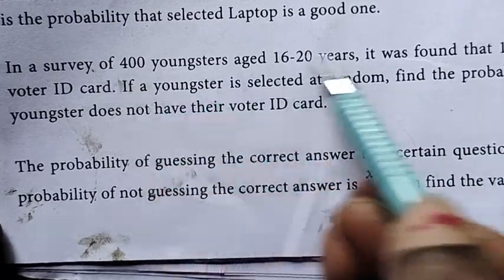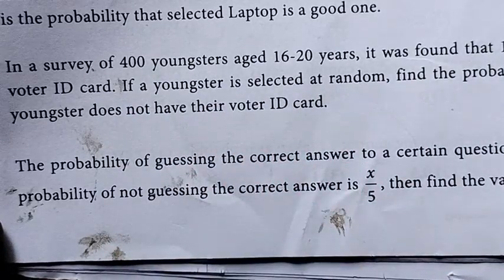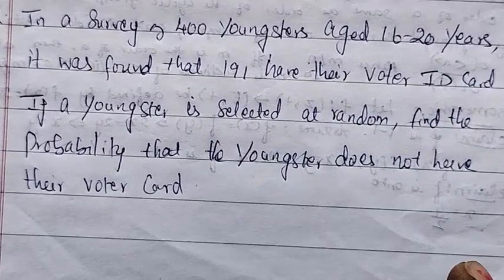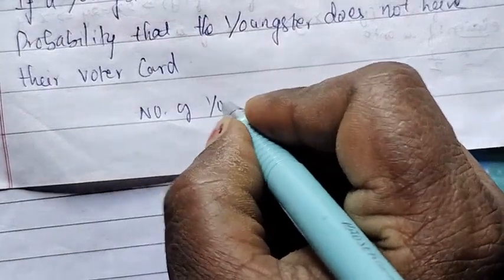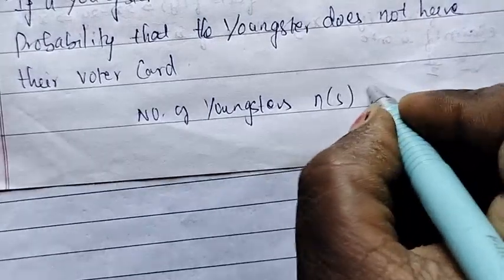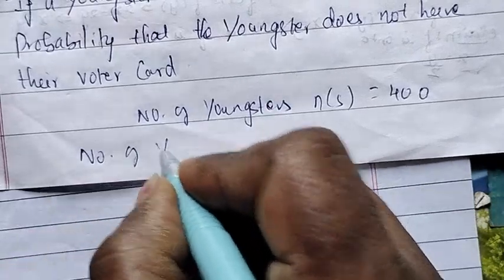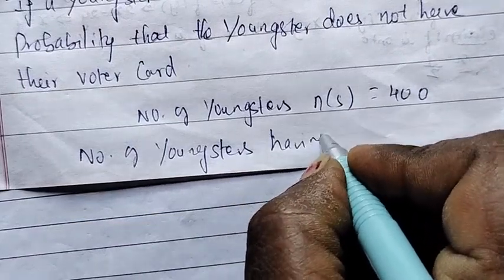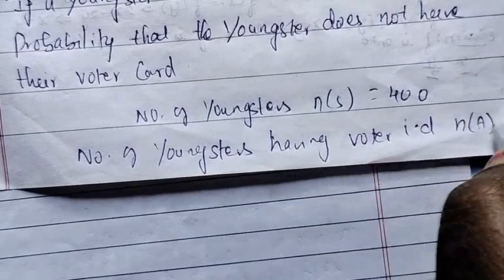If it does not have the voter ID code, that is 400 minus — that is the probability. Number of youngsters: n of S is equal to 400. Number of youngsters having voter ID: n of A is equal to 191.